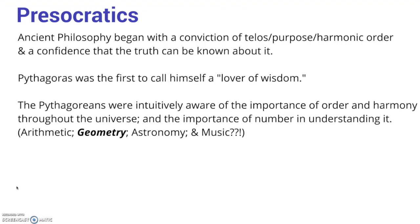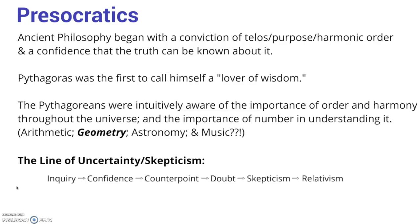When we look at the history of philosophy, there is an interesting trend we might call the line of uncertainty or the line of skepticism. Philosophy begins with inquiry. Inquiry assumes that there is something to be known, that something can be known. Inquiry eventually leads to greater understanding, and this gives us confidence. Eventually, our confidence meets a counterpoint — new ideas come up, there is tension, and this makes us step back and question our perspective. Sometimes we doubt ourselves, and this doubt is a big question.